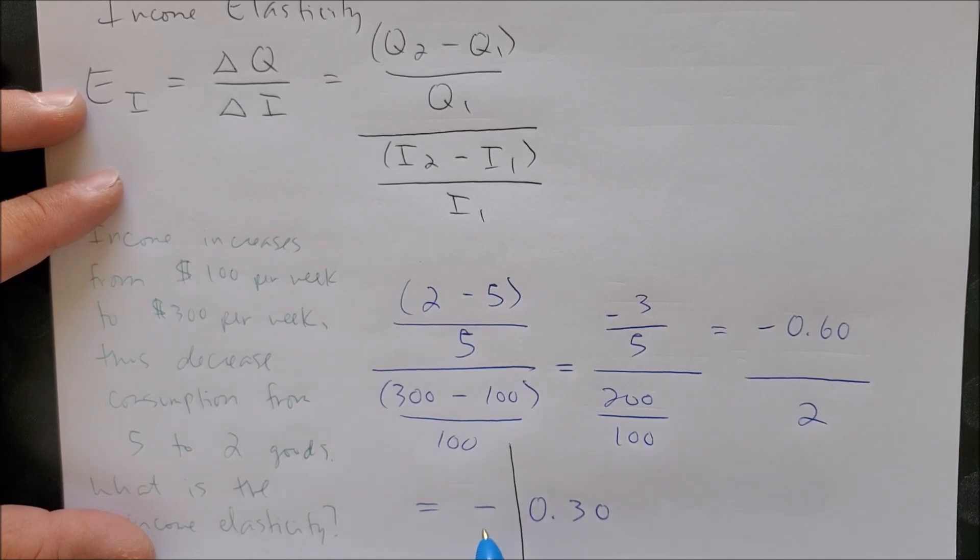The first part looks at the sign. The sign is a negative sign, therefore this good is an inferior good with respect to our income. And 0.3 represents inelastic—it is less than one.